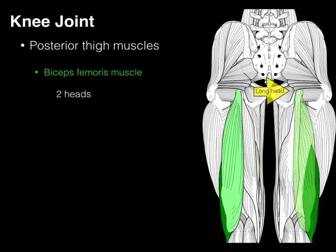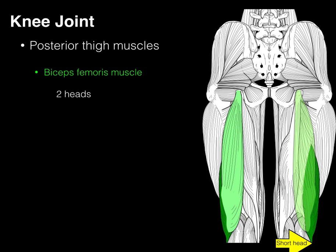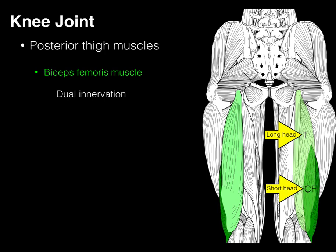Our biceps femoris muscle has two heads — hence biceps. The long head arises from the ischial tuberosity and courses down to attach to the head of the fibula. The short head arises from the linea aspera and also attaches to the head of the fibula. This is a unique muscle because it has dual innervation: the long head is innervated by the tibial nerve, and the short head is innervated by the common fibular nerve. Technically, the short head of the biceps does not belong to the hamstring muscles.